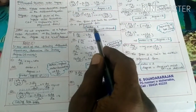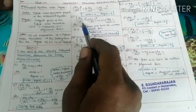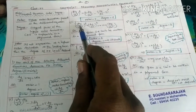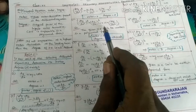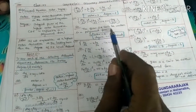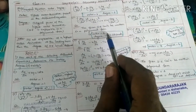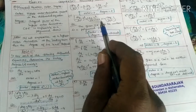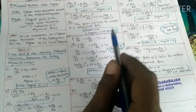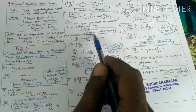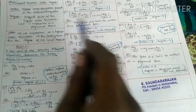Since we cannot write this in polynomial form, the degree is not defined. The highest order derivative is d²y/dx², so the order = 2. The degree is not defined because the equation is not expressible in polynomial form.